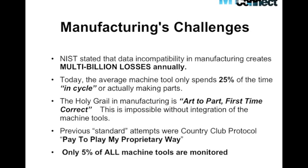The Holy Grail in manufacturing is art-to-part first-time correct. Art is the CAD — computer-aided design — you create something. Part is when the CAD goes to CAM and you actually make something, and you want to make it the first time. There's a lot of trial and error because if you can't get information easily off the machine tool, how can you possibly manage what you can't monitor and what you can't measure? Previous attempts were what I call the country club protocol — just like a golf country club, you've got to pay to join, pay each time out, and pay to play the proprietary way — and that does absolutely nothing to take the cost out of the equation.